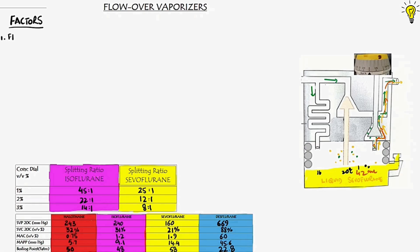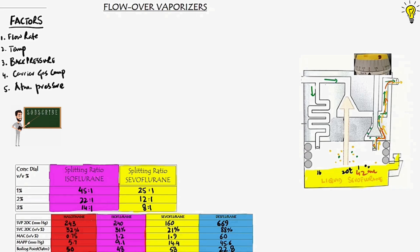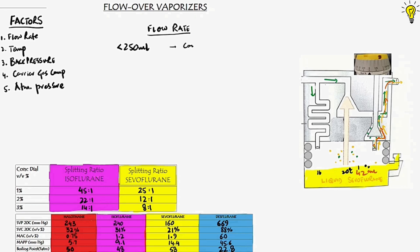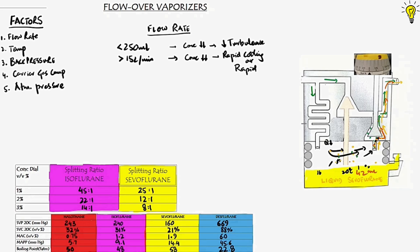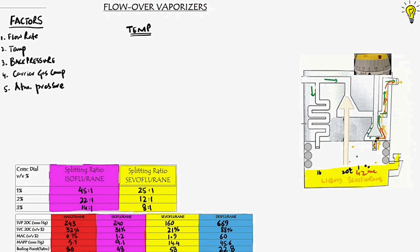The final section is about factors that can affect bypass vaporizers. Vapor output is quite stable between fresh gas flow rates of 250 ml/min and 15 L/min. Beyond these points, concentration decreases — at lower flows, there is not enough energy to push vapor towards the outlet; at higher flows, concentration decreases due to rapid cooling. Flow-over vaporizers are very stable in output between 10 and 40°C.